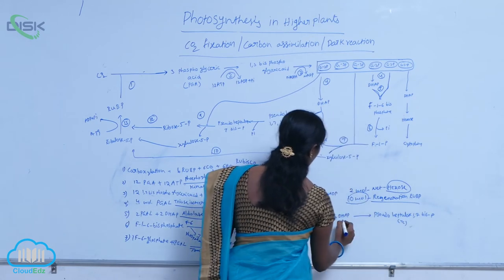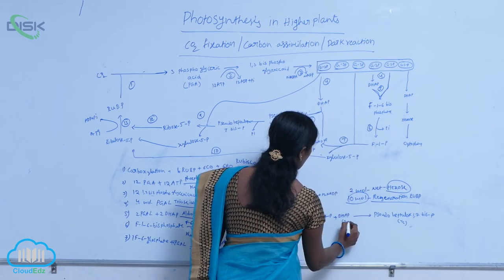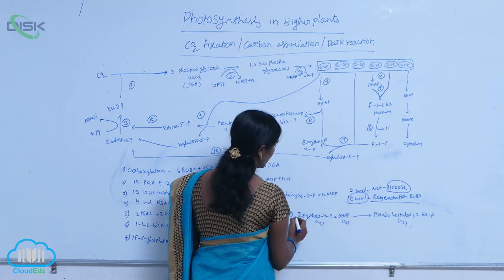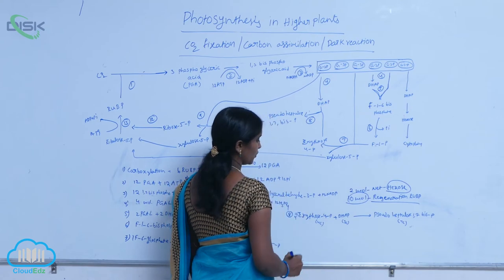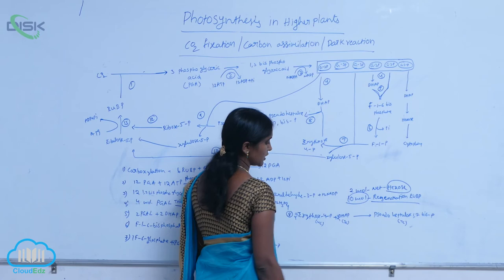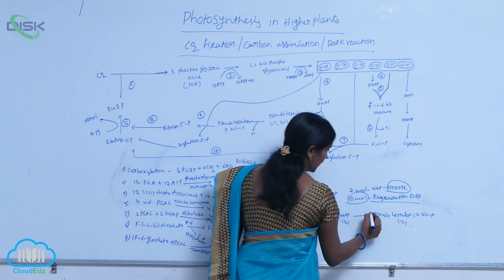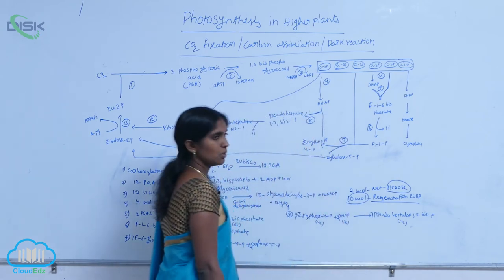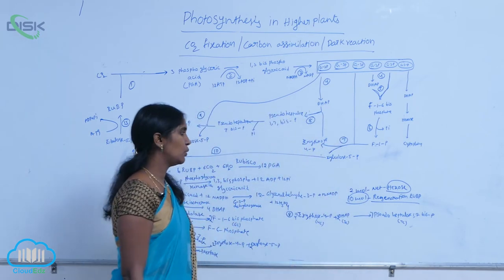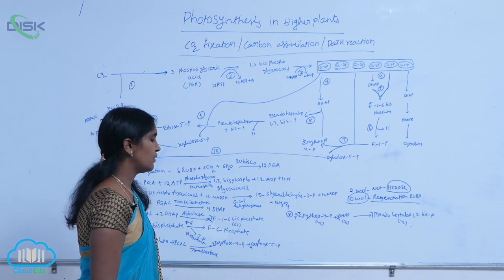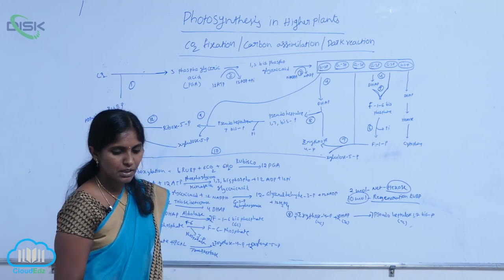The carbon counts are 3C and 4C. 2 molecules of erythrose-4-phosphate and 2 molecules of DHAP yield 2 molecules of pseudo-heptalose-1,7-bisphosphate.